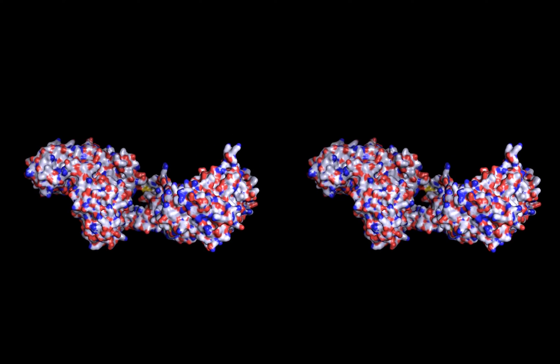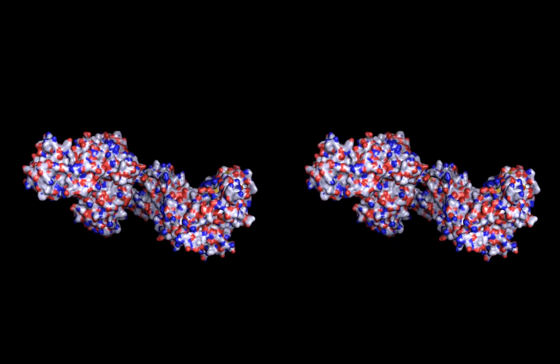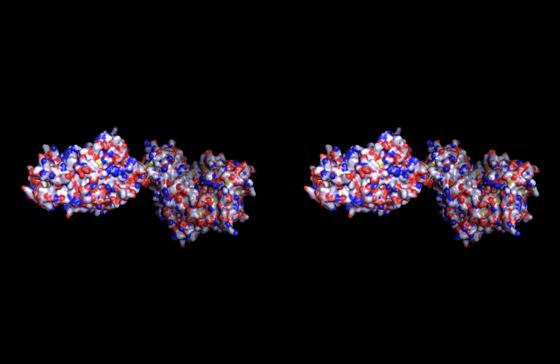Hexokinase is an enzyme, so it catalyzes a chemical reaction, and the kinase part of the name means it adds a phosphate to something.